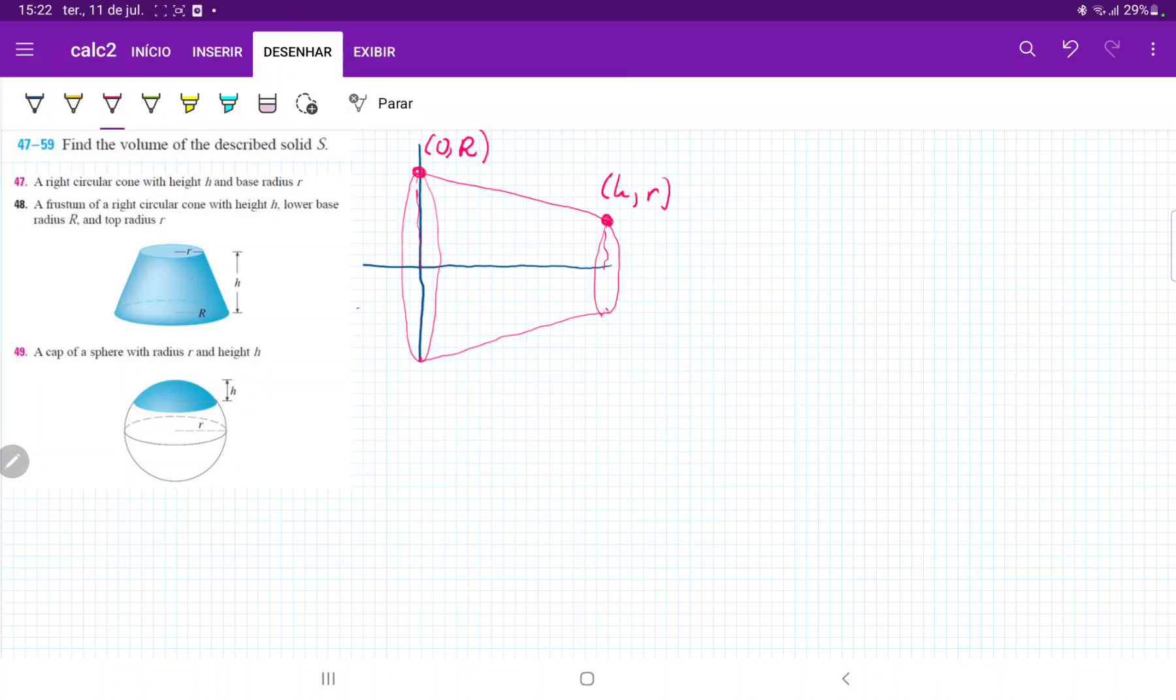And then on the x-axis, we have h, which is this distance here between the two circles.